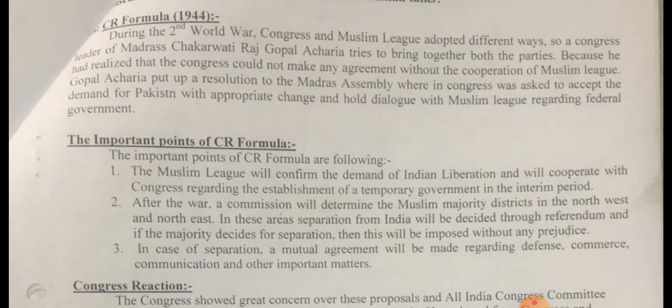CR formula was presented by Mr. Chakravarti Rajagopalachari in 1944. In this formula, he told the Congress to accept the demand of Pakistan and they must have dialogues with the Muslim League regarding the federal government. He gave this formula because he made it clear that without the cooperation of the Muslim League, Congress could not make any agreement with the British government.